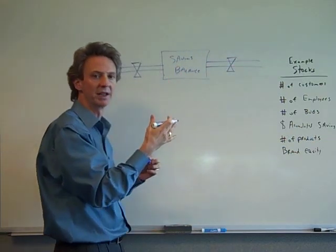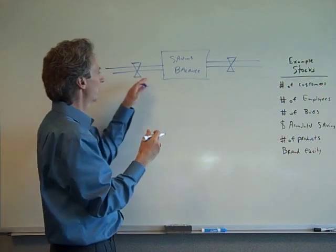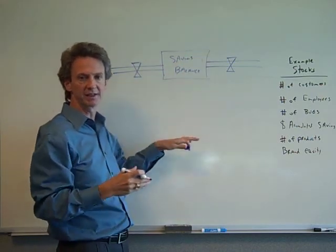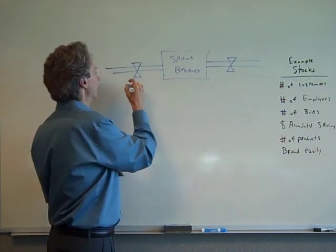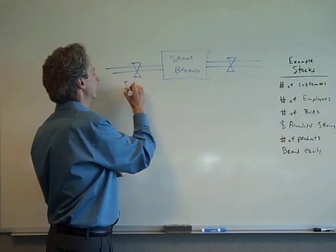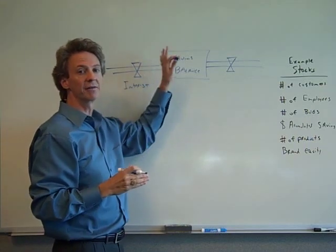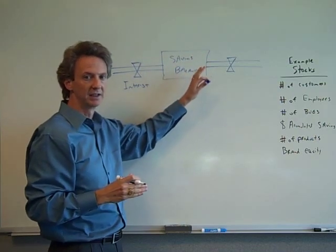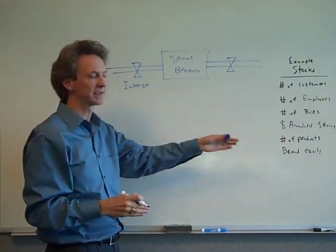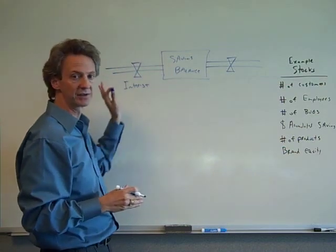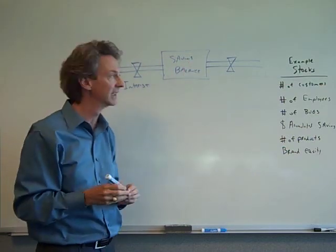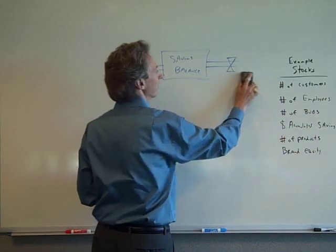A typical stock will have an inflow and an outflow. In terms of what comes into your savings, what makes it get bigger is interest in this example. So interest is the only inflow into the stock. There was an initial savings put in a long time ago, but for this model it's really interest that's the only thing that's been added since. In this case